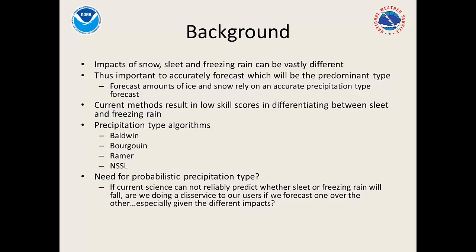So for background: precipitation type forecasting is difficult and the impact can be pretty different. If you get an inch of QPF and it's all snow versus mixed with sleet or freezing rain, the impact can be vastly different. It is important to try to accurately forecast which will be the predominant type, and QPF is a big issue, but another is what the predominant type will be.